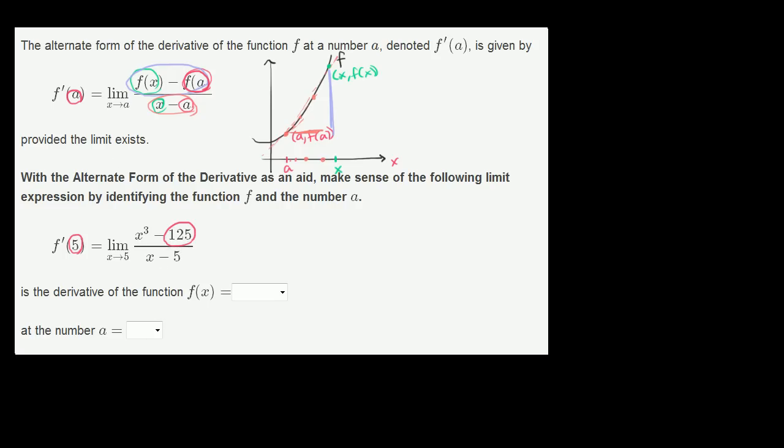Now, what about f of x? Well, here, it's the limit of f of x minus f of a. Here's the limit as x to the third minus 125. And this makes sense. If f of x is equal to x to the third, then it makes sense that f of 5 is going to be 5 to the third, which is 125.